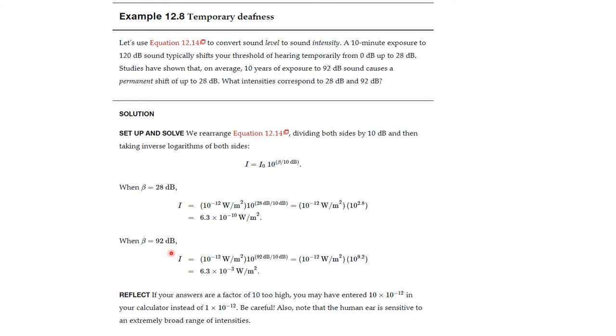When beta is 92 dB, we will plug 92 into this equation. And we will get 10 to the minus 12 times 10 to the 9.2. This is 6.3 times 10 to the minus 3 watts per square meter.